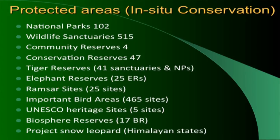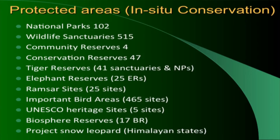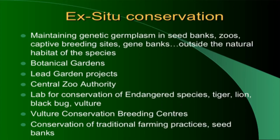Protected areas have different levels of protection: national parks have the highest, followed by wildlife sanctuaries, community reserves, and tiger and elephant reserves. Protecting tigers or elephants means protecting the entire food chain and ecosystem. In-situ conservation means conserving species in their natural habitat. Ramsar sites, Important Bird Areas, and biosphere reserves are all forms of in-situ conservation.